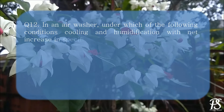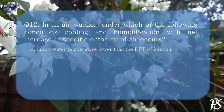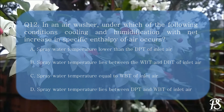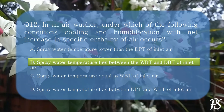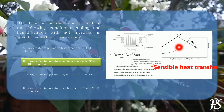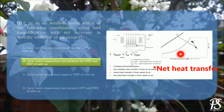In an air washer, under which of the following conditions does cooling and humidification with a net increase in specific enthalpy of air occur? A. Spray water temperature lower than the dew point temperature of inlet air. B. Spray water temperature between wet bulb temperature and dry bulb temperature of inlet air. C. Spray water temperature equal to wet bulb temperature. D. Spray water temperature lies between dew point temperature and wet bulb temperature of inlet air. The correct option is B — spray water temperature lies between the wet bulb and dry bulb temperature of inlet air. In this case, sensible heat transfer is from air to water and latent heat transfer is from water to air, but total heat transfer is from water to air, resulting in increased enthalpy.